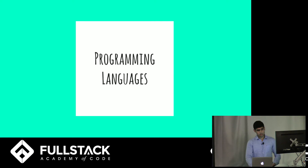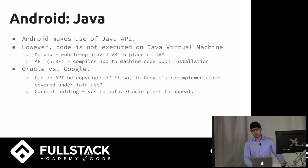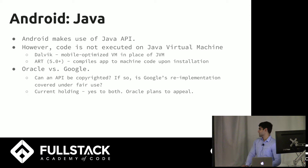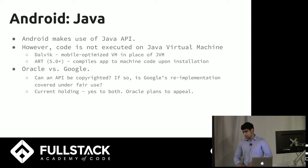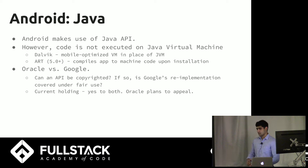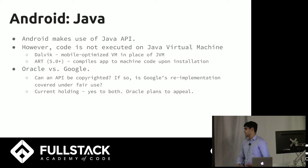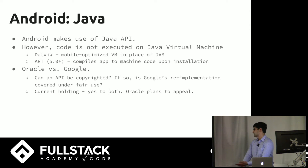There are three main programming languages I'm going to talk about. There's Java, and this is actually the subject of a court case right now. Oracle has sued Google because from a programmer's perspective it's exactly the same — you're programming in Java. Of course there are some new APIs that are phone-specific, but behind the scenes it's different. So the question is: can an API be copyrighted? And if so, is Google's re-implementation of the Java language fair use? So far they've decided yes, but it's still ongoing.